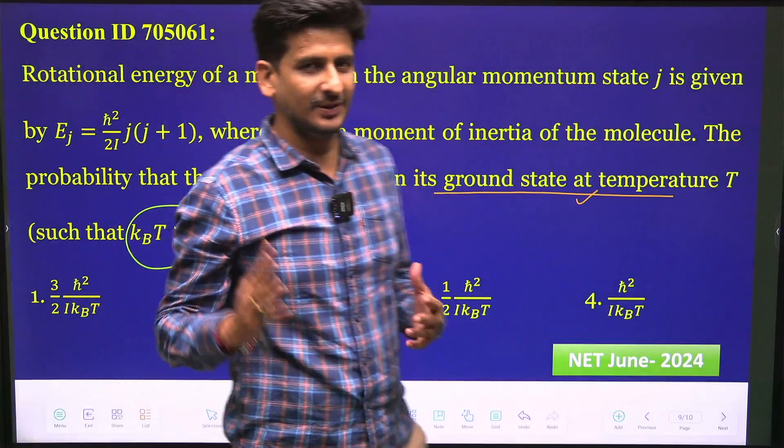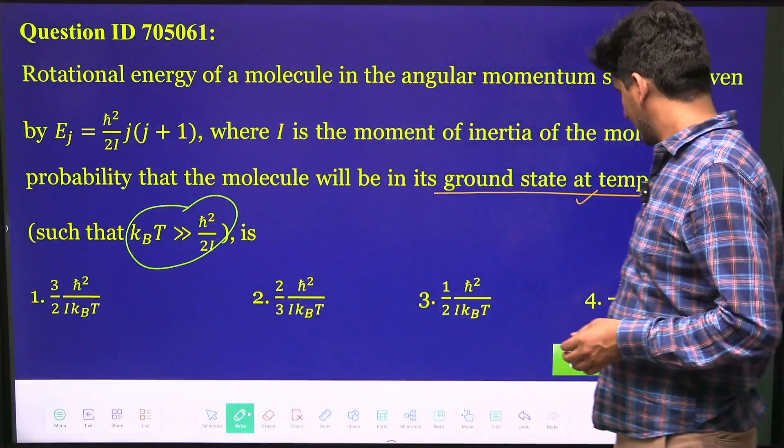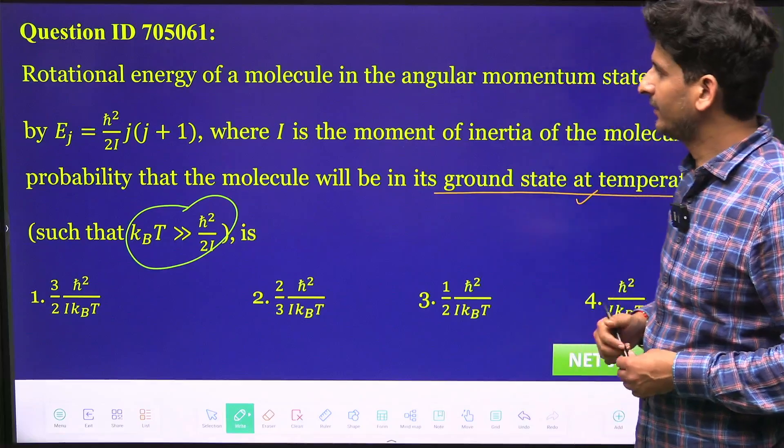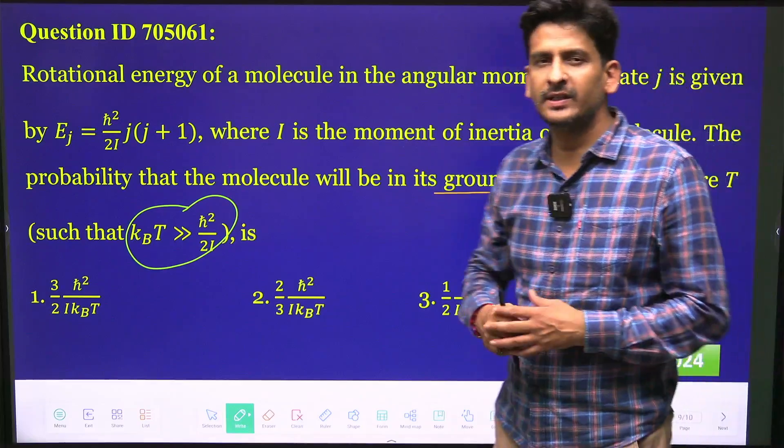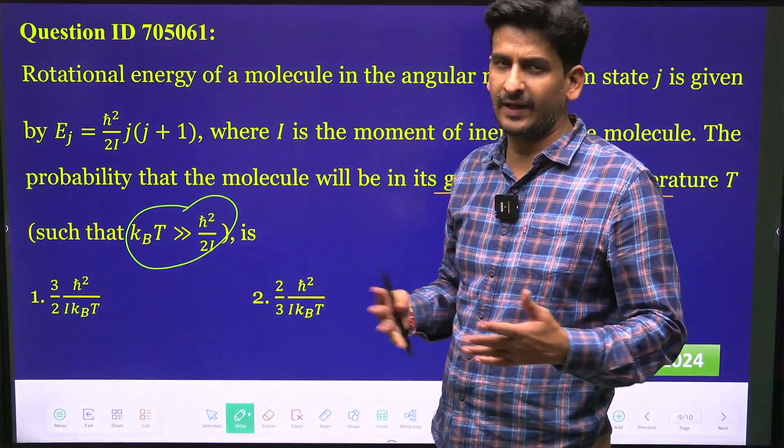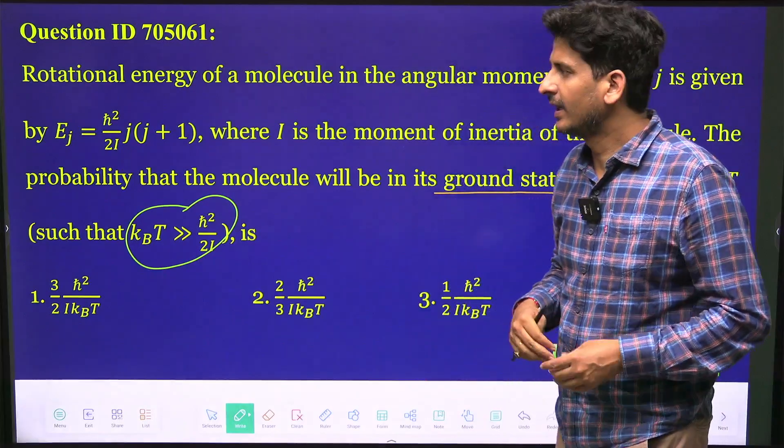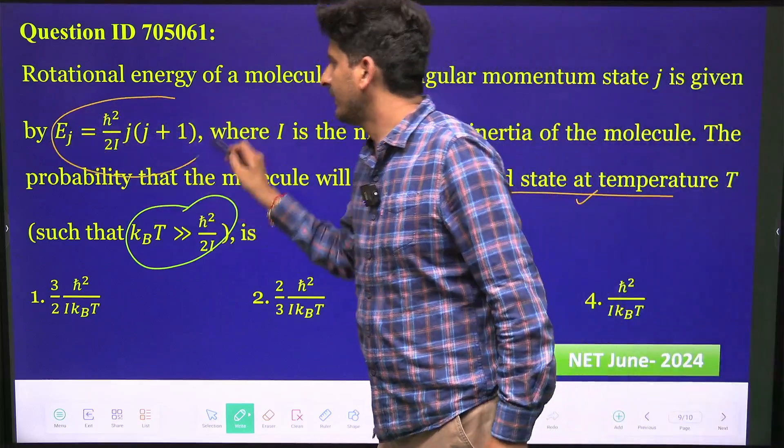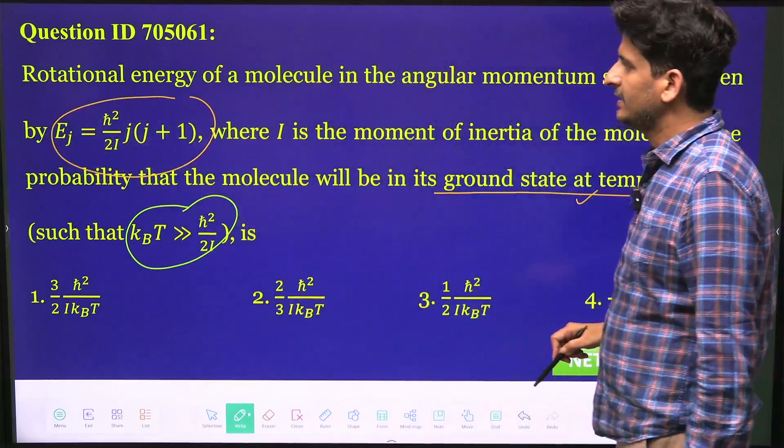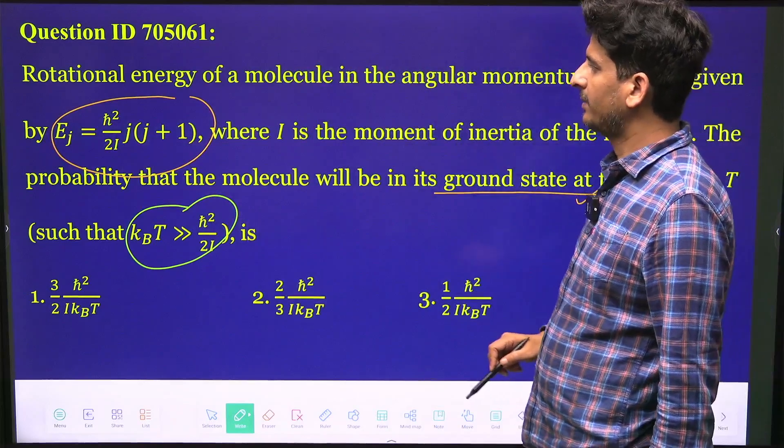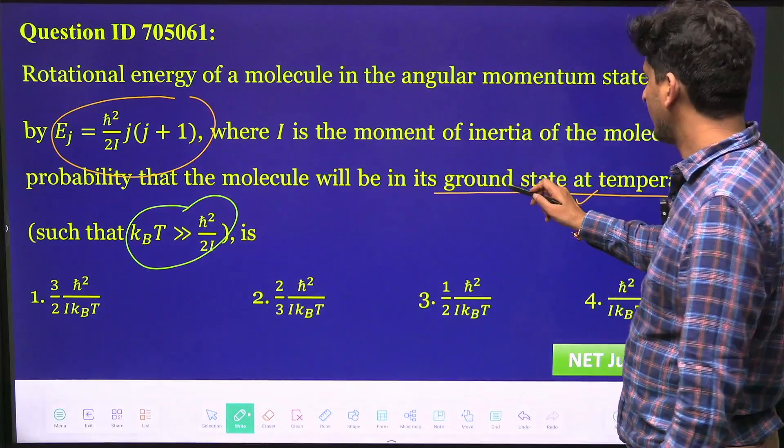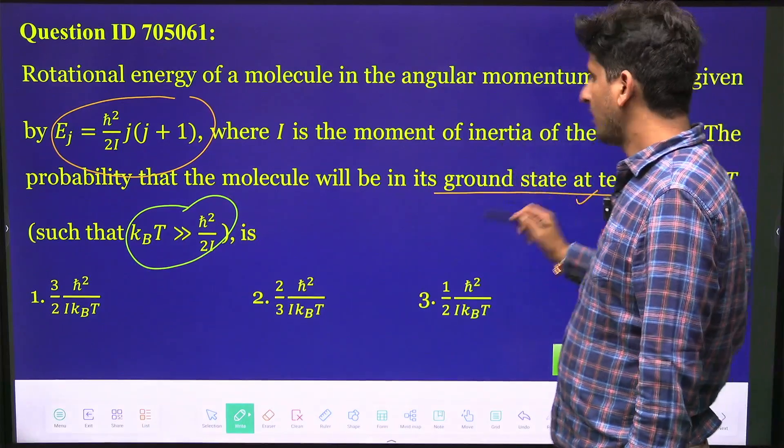Hello students, this is question ID 705061 from NetJune2024. This question is based on rigid rotor, which I've been discussing in class. The rotational energy is given by Ej = ℏ²/(2I) × j(j+1), and we have to calculate the probability